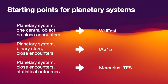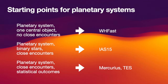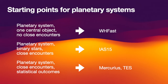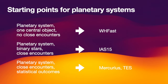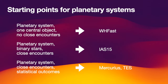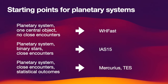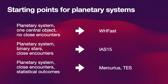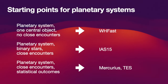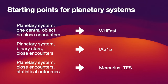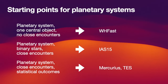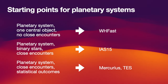In most cases, if you have a planetary system with one central object and you're not expecting close encounters between the planets, use WHFAST. You might still have close encounters at the very end when your planetary system goes unstable — in that case you can still use WHFAST, but you cannot trust your approximation after close encounters have occurred. You simply want to stop the simulation when a close encounter occurs and determine that this simulation went unstable.